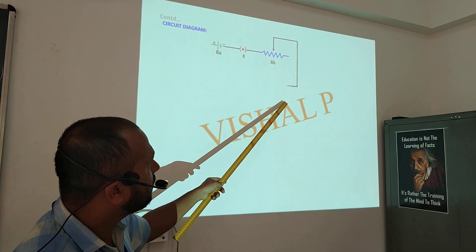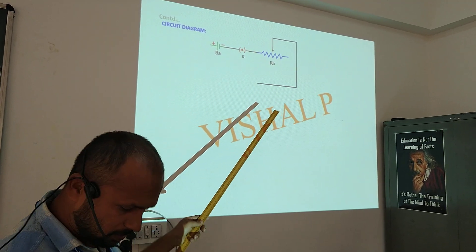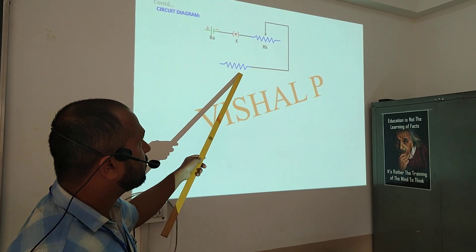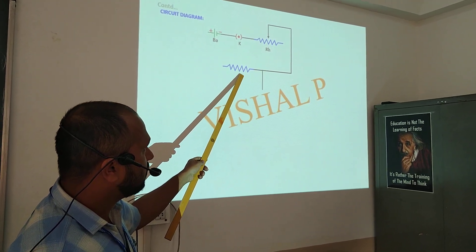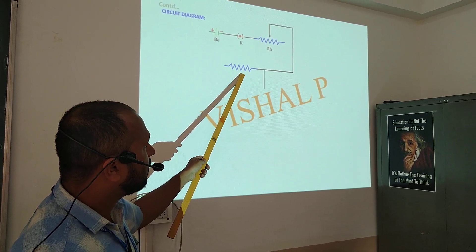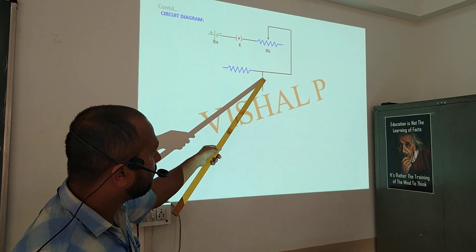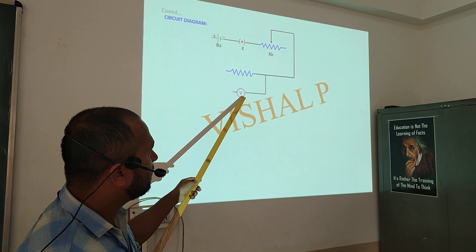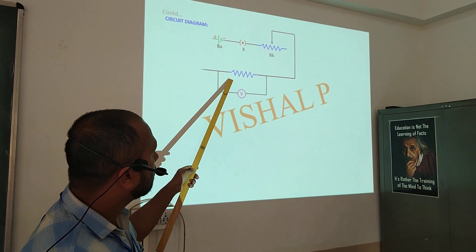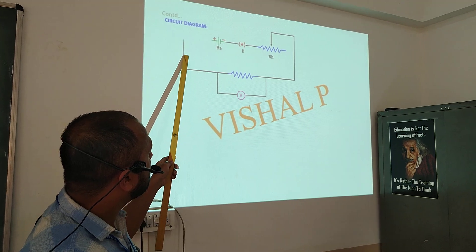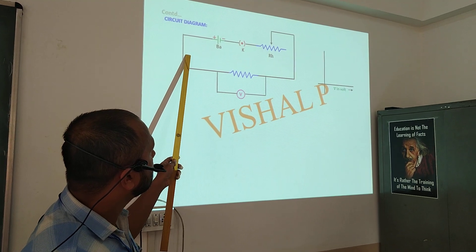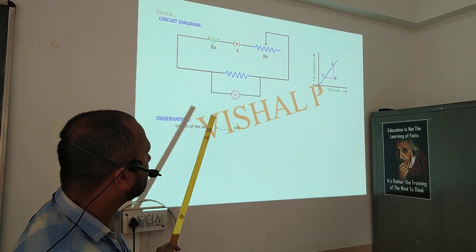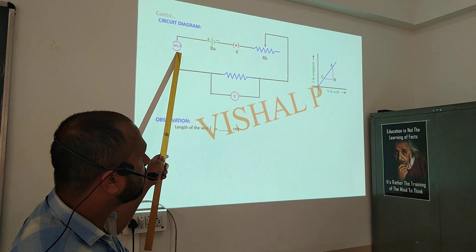I connect this rheostat. The rheostat is connected to the resistance of the wire whose resistance you are going to find. From here, you will take a wire and that wire is going to be connected to the voltmeter. Next, you will connect this to the milliammeter. You will get the milliammeter here. You will connect the milliammeter.